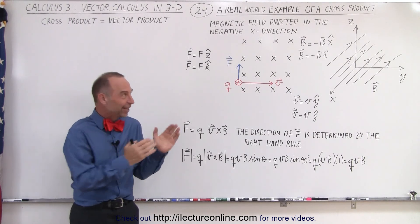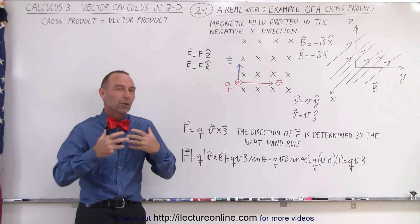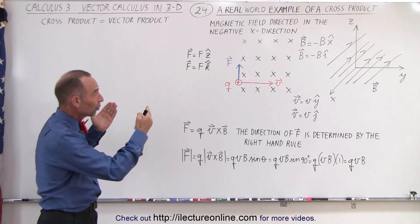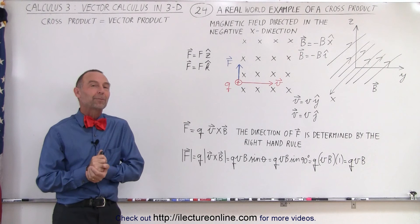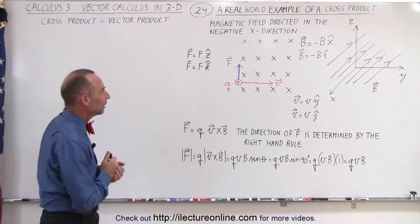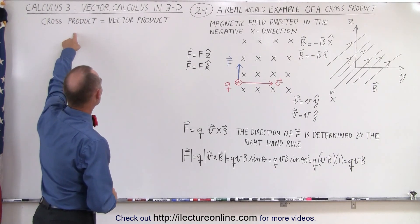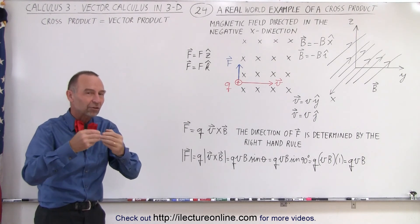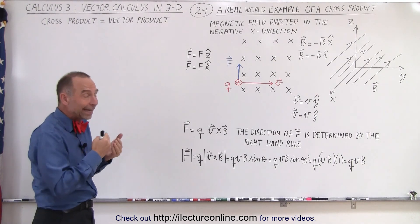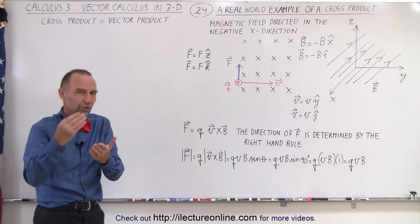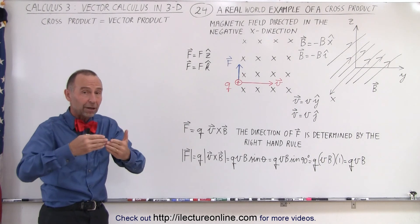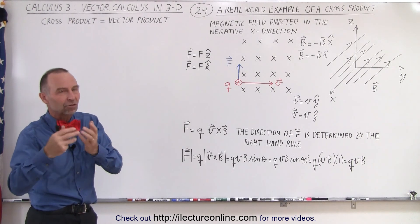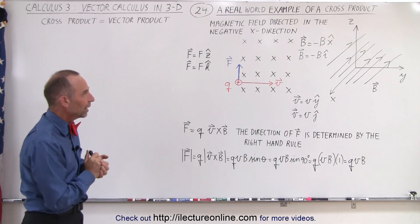Welcome to ElectronLine. In this video, we're going to talk about what a cross-product actually is in the real world. Remember that a cross-product is also called a vector product because it's the product between two vectors, and the result of a vector product is another vector, as opposed to a dot product, where the result gives you a scalar, not a vector. So there's the difference already.